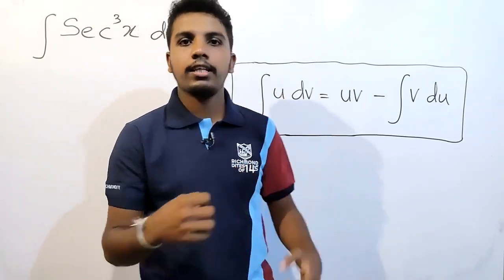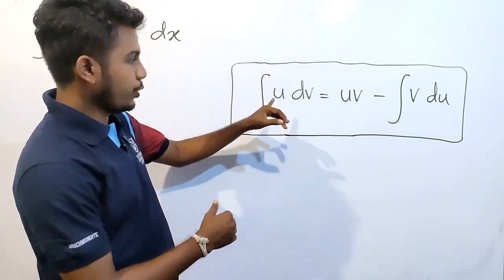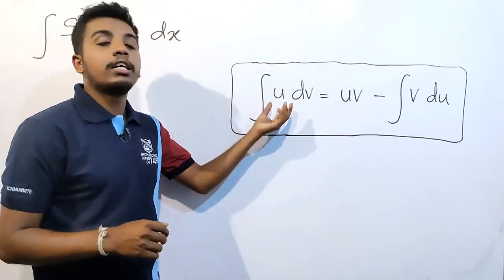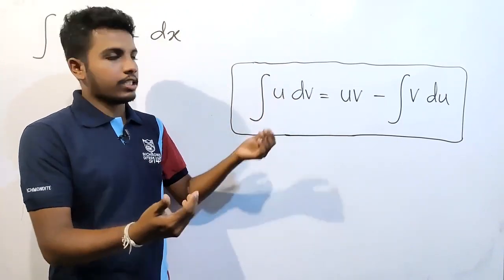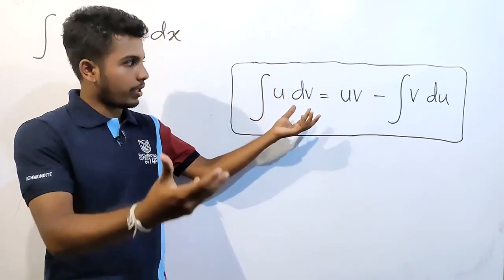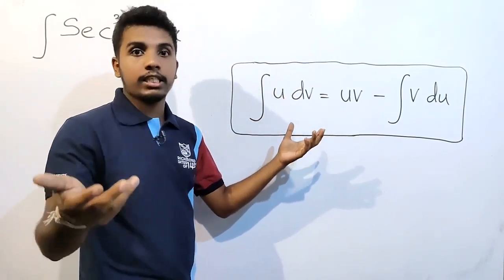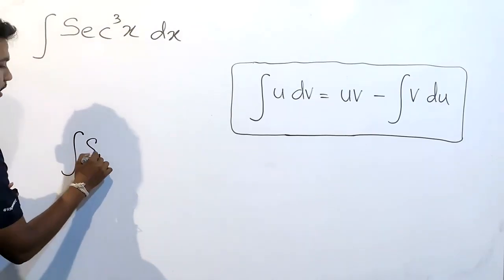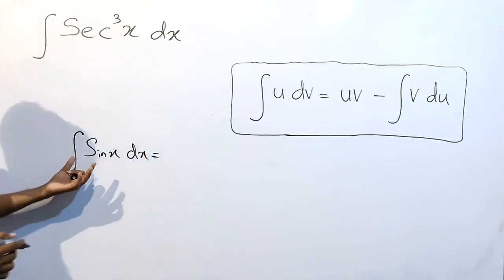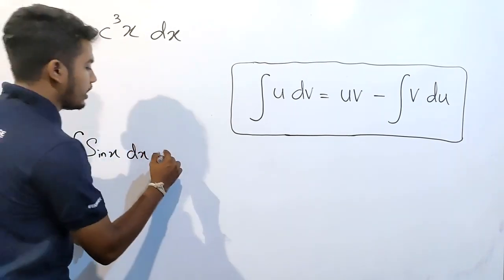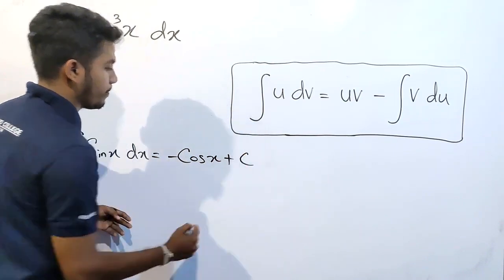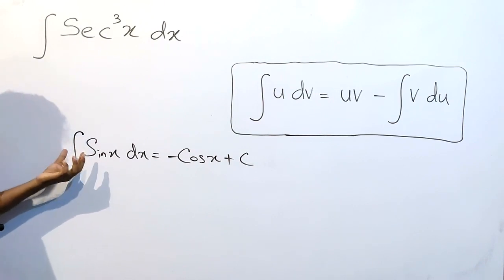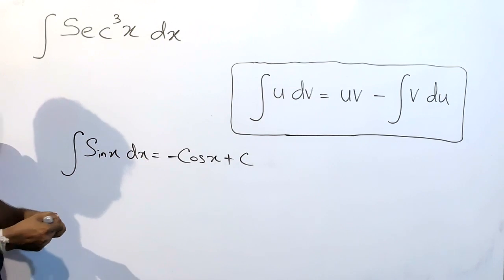u and v can be any kind of function — for example, sine x, cos x, sine cube x, e to the power x, x square, x cube, tan inverse x, sine inverse x. For example, we can integrate sine x and the answer is minus cos x plus c. This is the integration of sine x with respect to x.